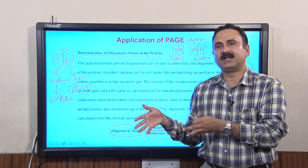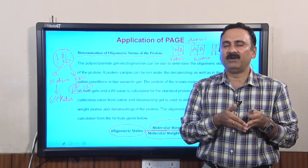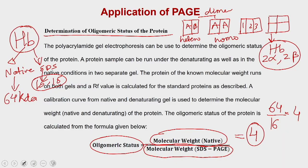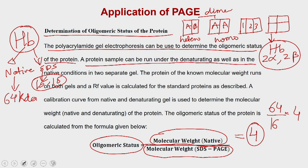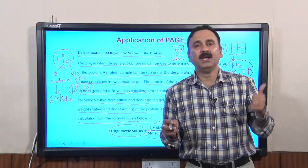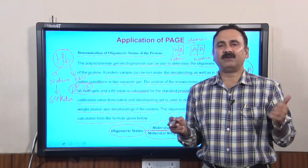You can go further and do characterization experiments to prove the hemoglobin produced in E. coli carries oxygen. In summary, a protein sample is run under denaturing and native conditions on two separate gels, RF values are calculated, calibration curves are drawn for each, and the oligomeric status is calculated as molecular weight in native conditions divided by molecular weight in denaturing conditions.